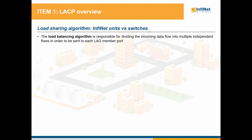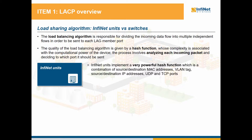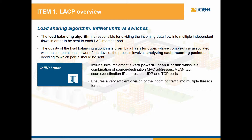Link aggregation requires the implementation of a load balancing algorithm that is responsible for dividing the incoming data flow into multiple independent flows in order to be sent to different LAG member ports. The quality of the load balancing algorithm is given by a hash function, and the complexity of the hash function is associated with the computational power of the device and as a consequence it is also associated with the price of the device. The process involves analyzing each incoming packet and deciding to which port it should be sent. Infinite Wireless units implement a very powerful hash function, which is a combination of source and destination MAC addresses, VLAN tag, source and destination IP addresses, IP protocol, plus UDP and TCP ports. This ensures an efficient division of the incoming traffic into different threads without worrying about the source of the traffic.